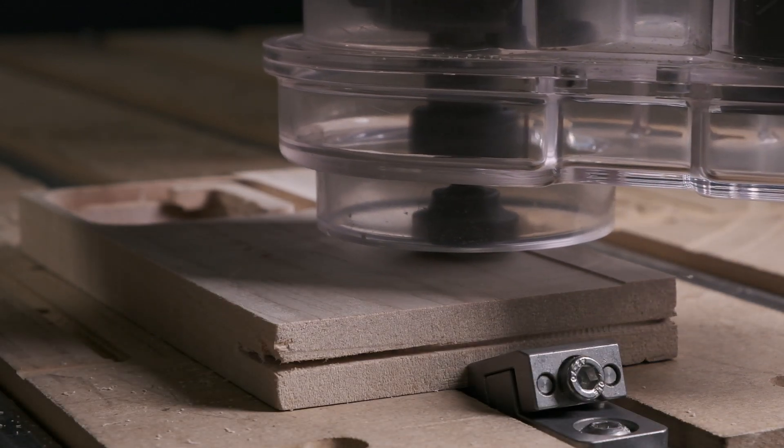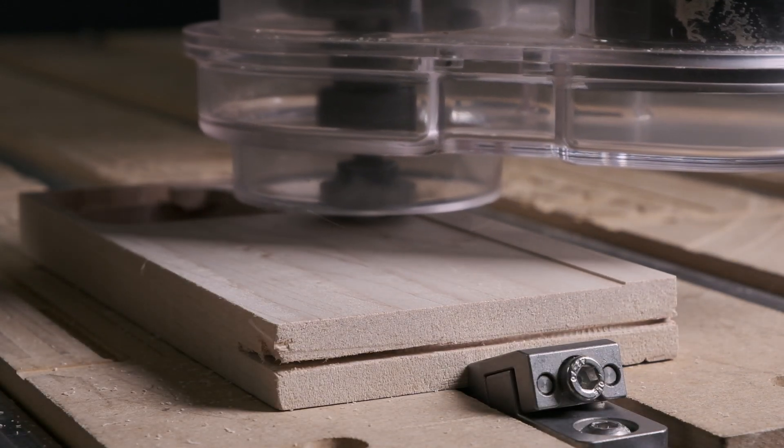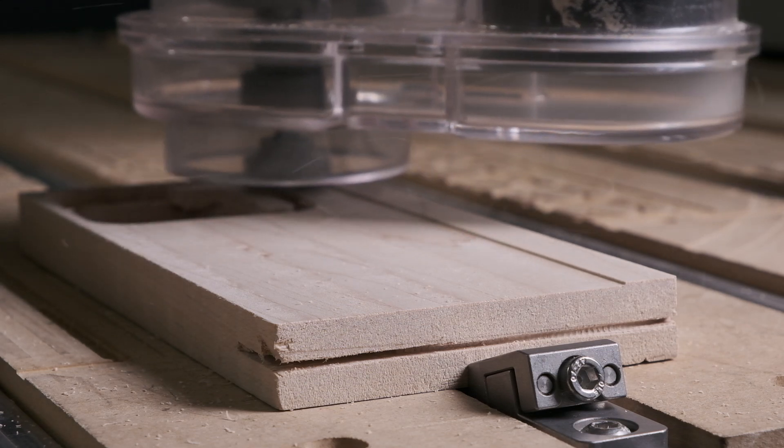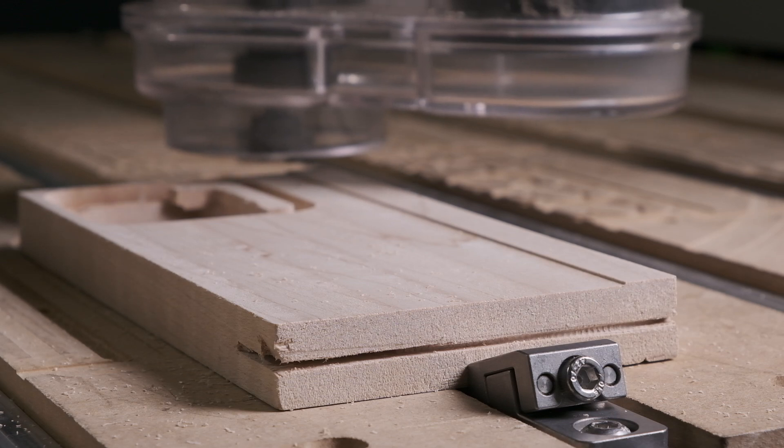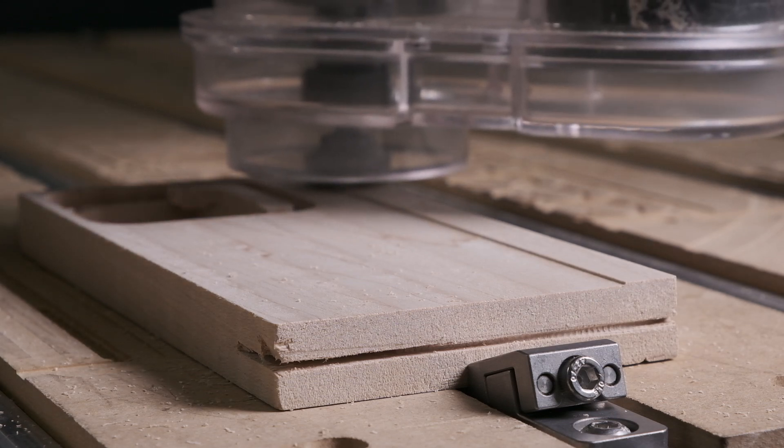For speeds and feeds, we recommend starting with an RPM of between 16,000 to 18,000. So regardless of whether you're using our router, a Makita, a DeWalt, or a proper VFD spindle, the McFly Cutter should be suitable for your setup.